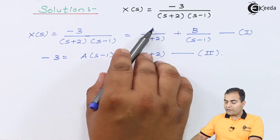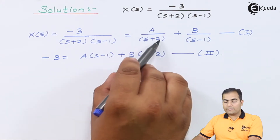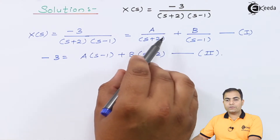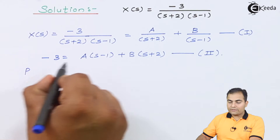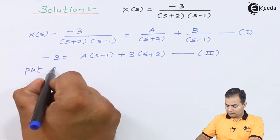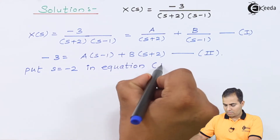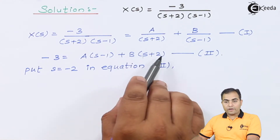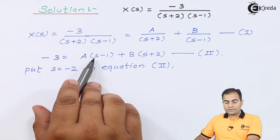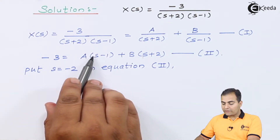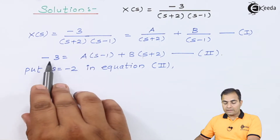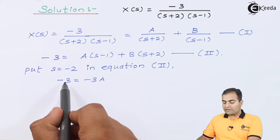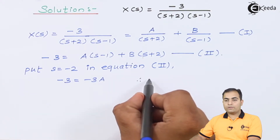To find variable A, equate (s+2) = 0, giving s = -2. Substituting s = -2 into equation 2: the term with D vanishes because (-2+2) = 0. On the left side, -2 minus 1 gives -3, so we have -3 = A(-3). Dividing both sides, the -3 cancels and A = 1.